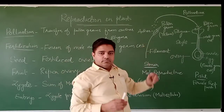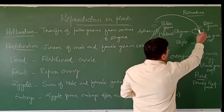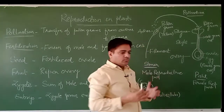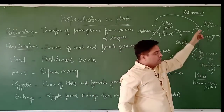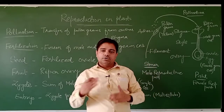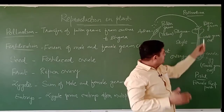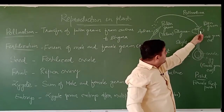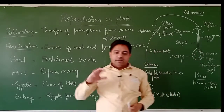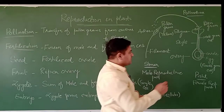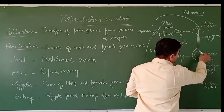When the pollen comes to the stigma, the pollen germinates and builds a tube — a tube-like structure — which goes inside the stigma, then intrudes through the style, and comes to the ovary region.